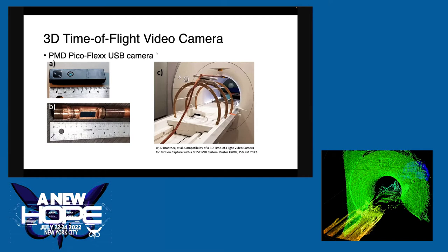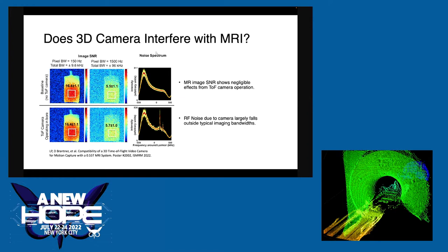Another cool thing about MRI: these are headphones for hearing protection, and you'll see there's an air tube. They pipe the sound in using an air tube because you want to avoid conductors in the MRI if at all possible — they can heat up and cause burns. We want to show that our sensors don't interfere with the MRI. SNR, or signal-to-noise ratio, is a huge factor in MRI, and we want to make sure we're not negatively affecting the SNR of the scanner. The MRI signal is entirely radio frequency, so we also need to make sure we're not causing RF interference.